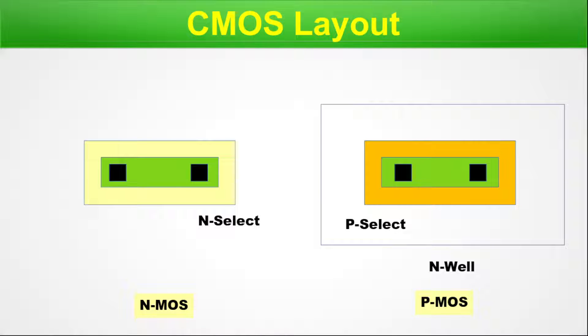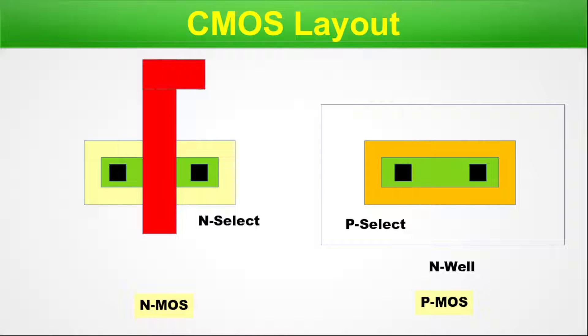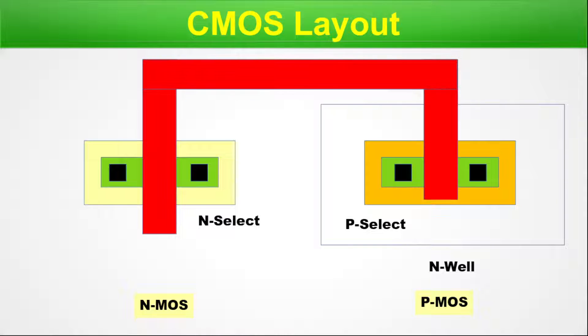As soon as we put the contacts, our middle end of line MEOL starts. And then we have the poly gate connecting them — the gate connection formation comes under the MEOL.